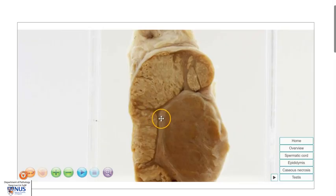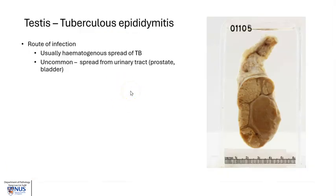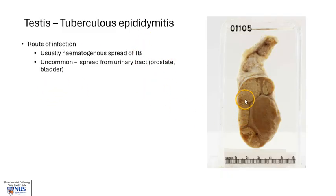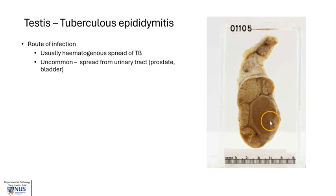Let's learn a bit about tuberculosis epididymitis. The route of infection is usually due to hematogenous spread. So the patient may have TB of the lungs, for example, and with seeding into the bloodstream, the microorganisms can reach the epididymis of the testis. Uncommonly, they can also spread from a more localized infection in the urinary tract, for example the prostate or the bladder.